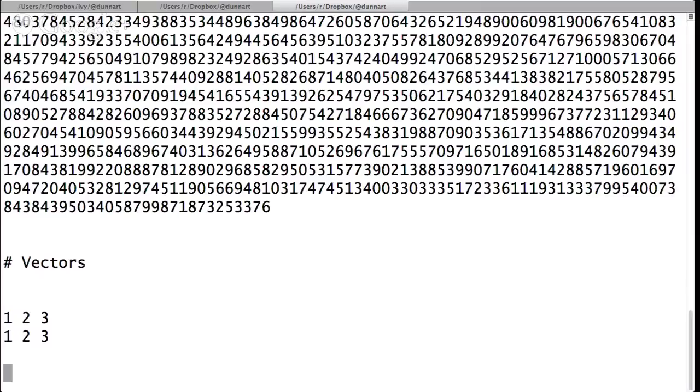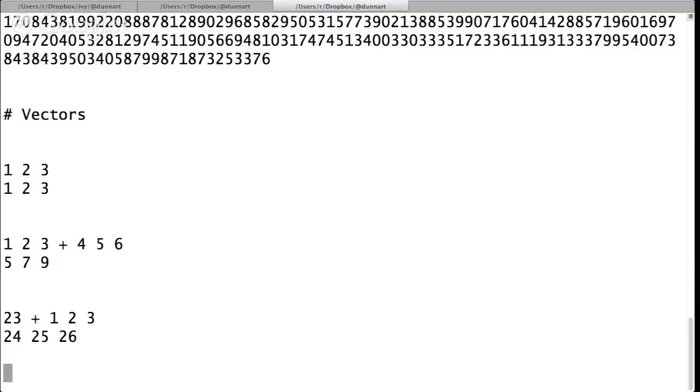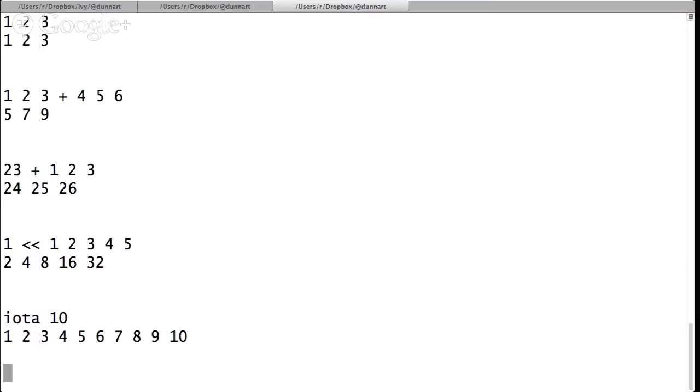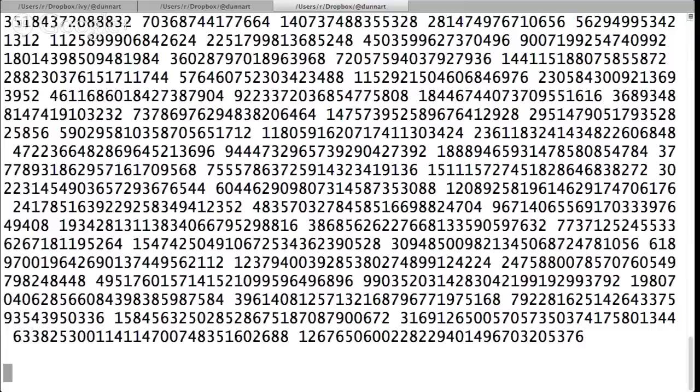It also has vectors, which is sort of a core idea from APL. So that's actually a vector. That's not just three numbers. That's a vector of three numbers. I can add vectors. I can add a scalar to a vector, which distributes across the vector. I can say, what are the first five powers of two, by shifting one left five times? There's this index generator, which is the iota character on the keyboard, but I just called it iota. That's the one keyword that made it from Go into here. So there's the first 10 integers.